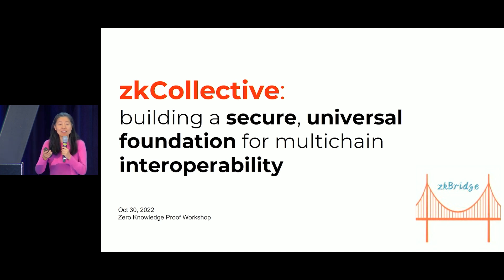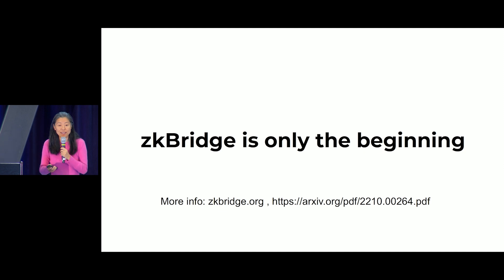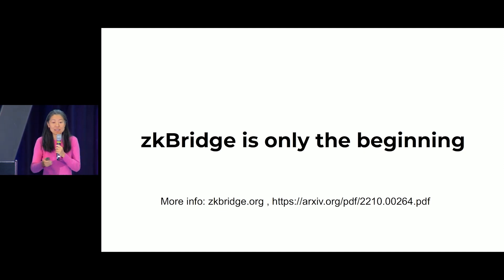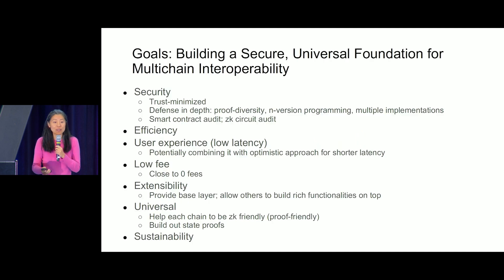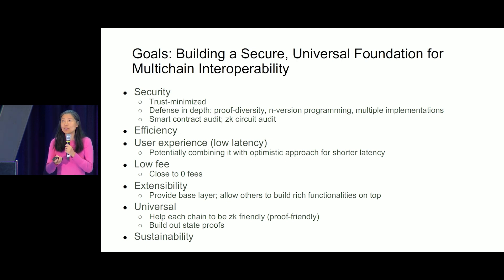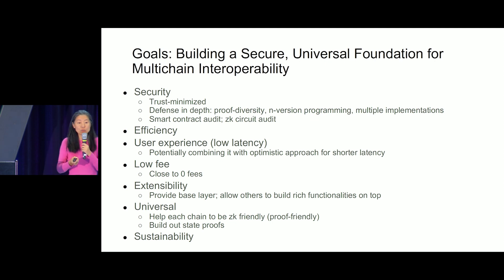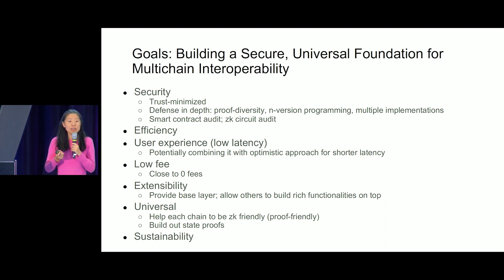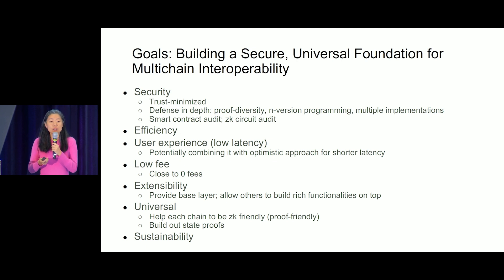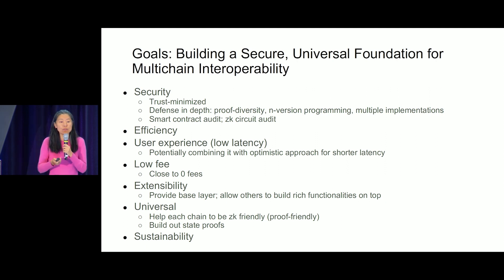What Tiancheng presented on ZK Bridge is only just the beginning. For more information, you can go to zkbridge.org and look at the latest version of the paper. The goal of the ZK Collective is to build a secure universal foundation for multi-chain interoperability, achieving a number of goals. First, really strong security: trust-minimized as Tiancheng already introduced, and also enabling defense in depth — including proof diversity and version programming — so that we can have multiple implementations of ZK Bridge that improve overall security, including smart contract audits and ZK circuit audits.